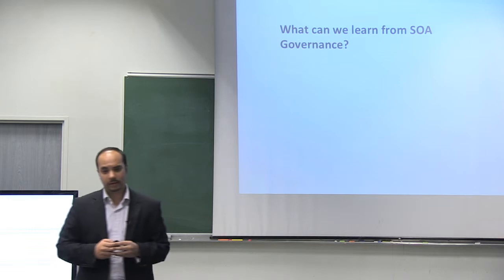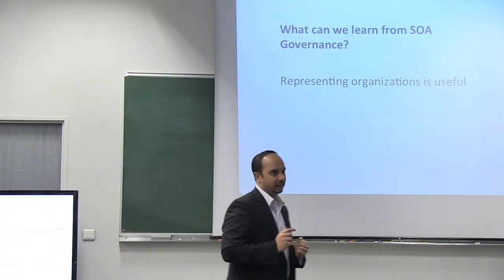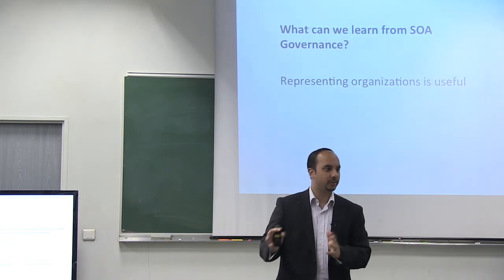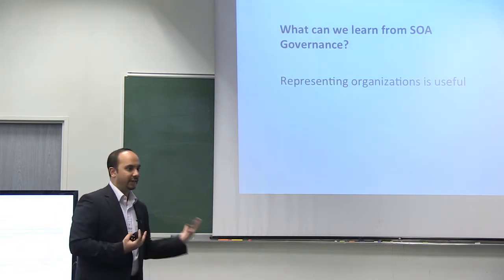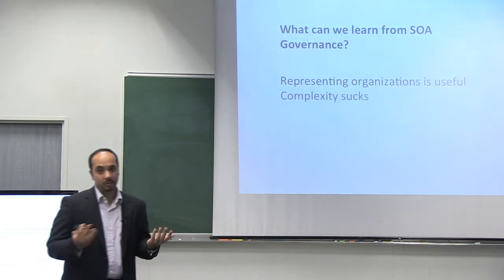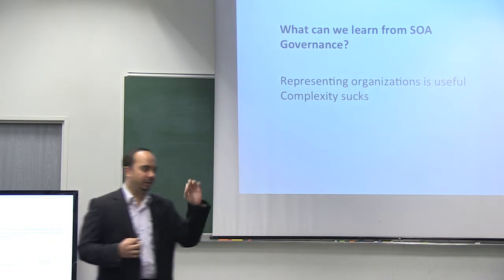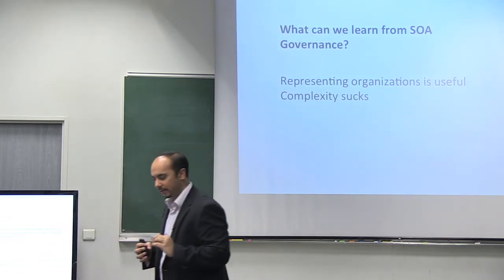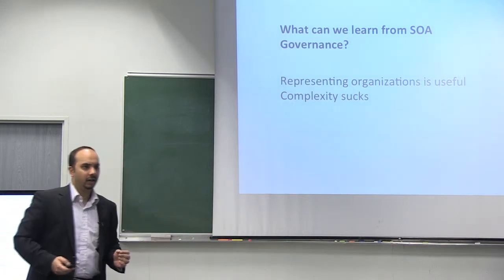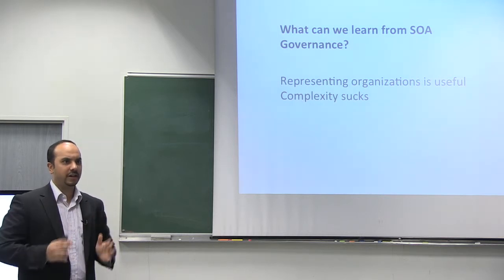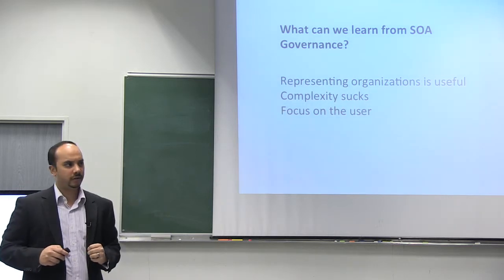What can we learn from SOA governance in the API management world? One thing is that we can really represent organizations effectively — that's something not always present in API management solutions. If you're building private APIs for B2B integration, you need that additional metadata, and we can take that from the governance world. But complexity is a problem in SOA governance. In organic systems things are simple, focused, and solve specific problems. SOA governance solutions often try to solve massive problems across an entire organization and lose that focus. If we're going to do management or governance, we need small, bite-sized pieces that solve real problems. We need to focus on the user — use tools that users want to use, not force users to use tools.